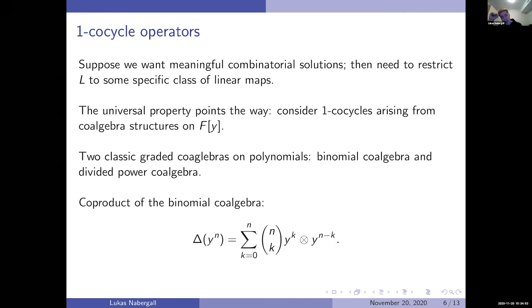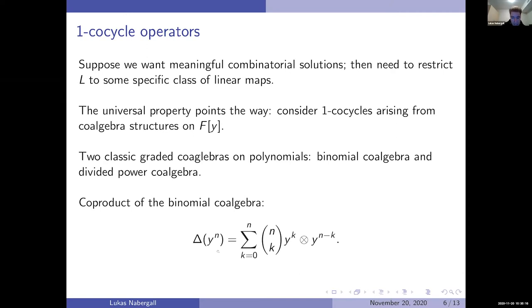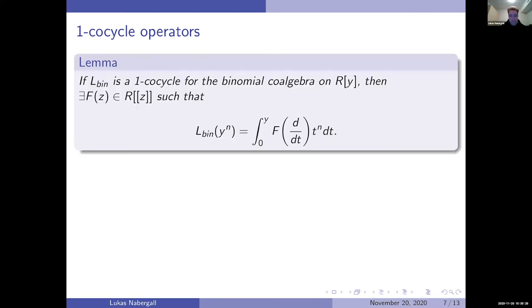They're isomorphic, but which one we look at does matter here because we're keeping the algebra the same but varying the coalgebra, and we'll get different results. For the binomial coalgebra, the coproduct is the following: you get this binomial coefficient, breaking y^n into y^k tensor y^(n-k). What we get then is this lemma describing the 1-cocycles for the binomial coalgebra.